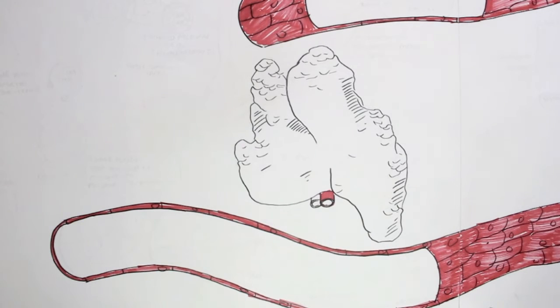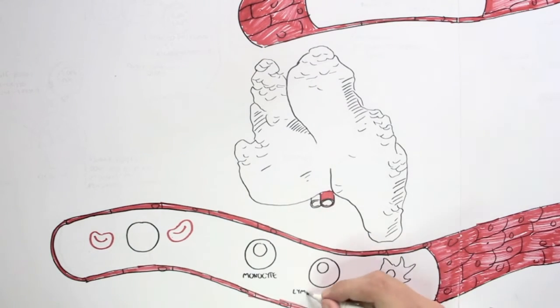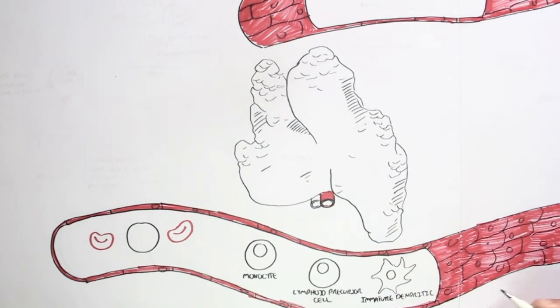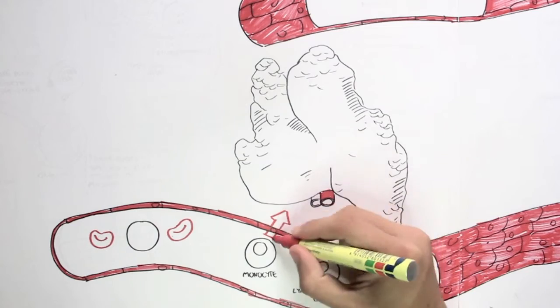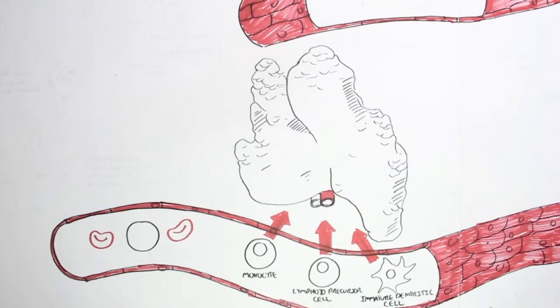And the cells that will migrate into the thymus are cells such as monocytes, which will become a thymus macrophage. And also, most importantly, the lymphoid precursor cell will migrate into the thymus, as well as the immature dendritic cell. And cells entering the thymus through the bloodstream will enter the thymus through the thymic artery.